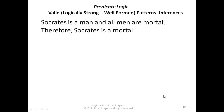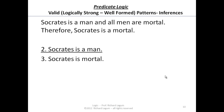Let's go back to our example: Socrates is a man, and all men are mortal, therefore Socrates is mortal. The first step is to reconstruct the argument. The conclusion is Socrates is mortal. And the premises are: one, Socrates is a man, and another is the generalization, all men are mortal.